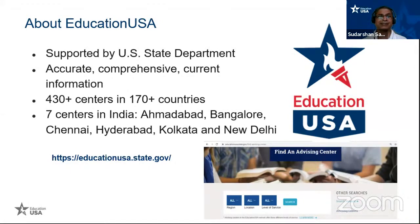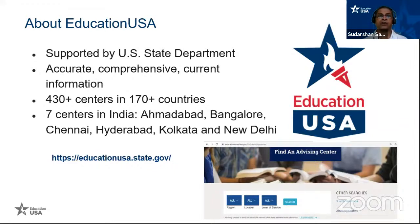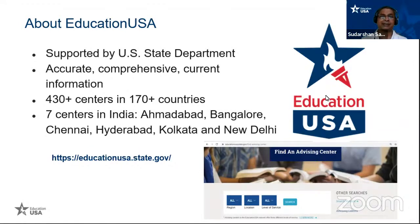We have seven EducationUSA Advising Centers in India — in Ahmedabad, Bangalore, Chennai, Hyderabad, Kolkata, and New Delhi. If you are in India, you can contact the nearest advising center. If you are staying outside the country, you may also get the list of all advising centers around the globe and contact any of them to get more information about studying in the U.S.